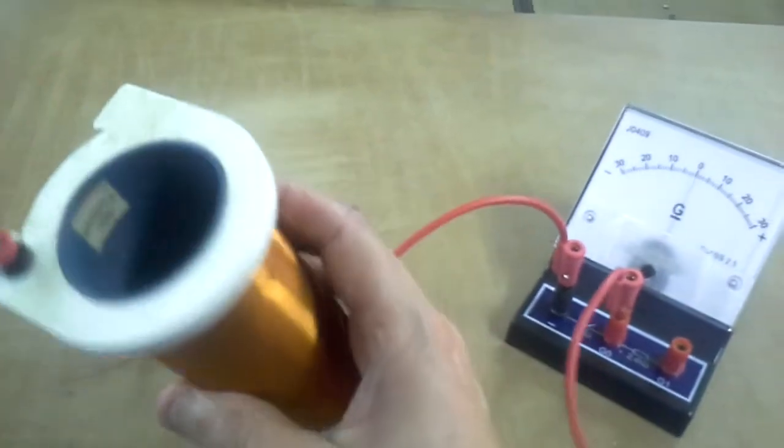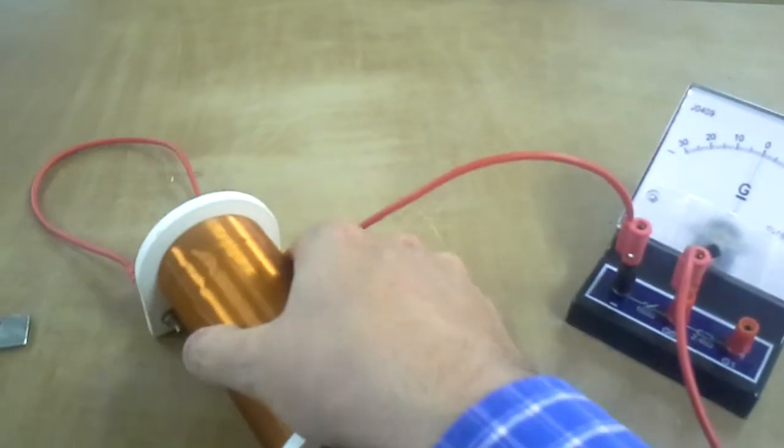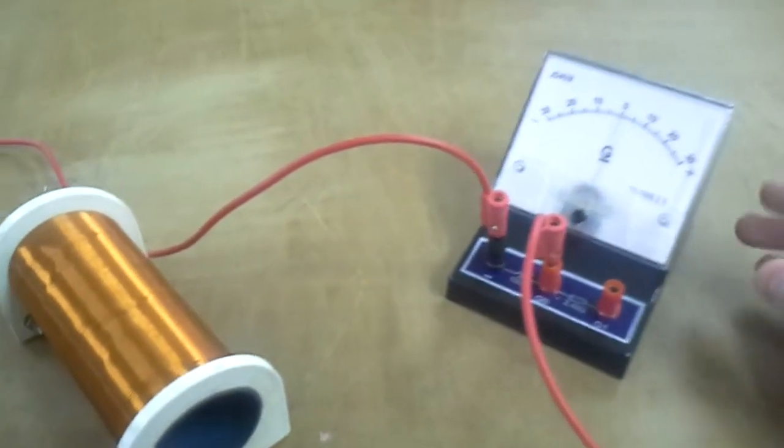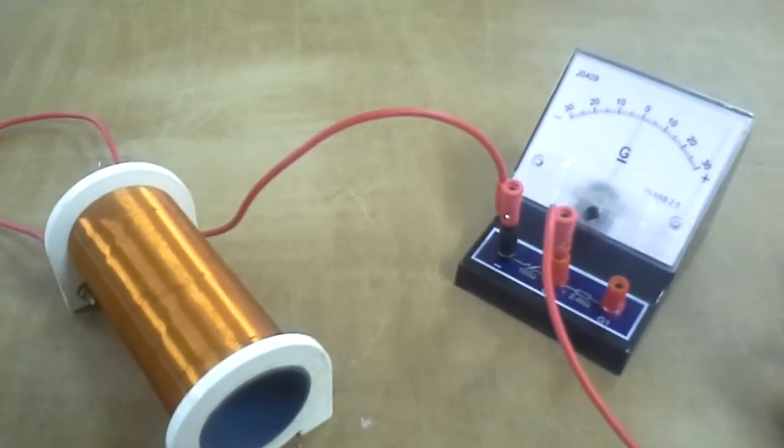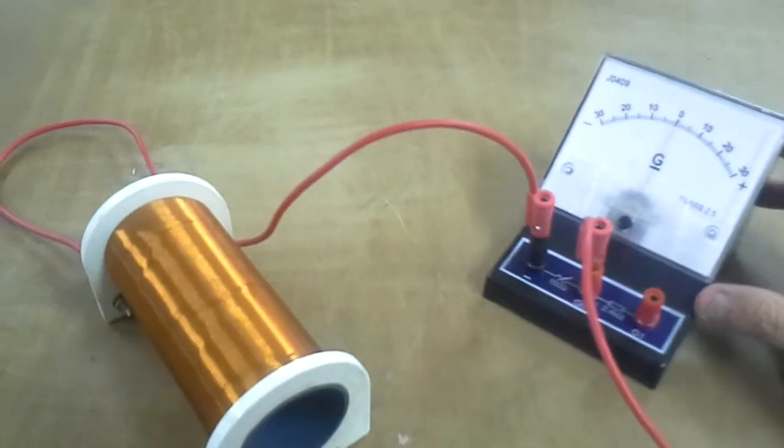You can see the tubing here, and I've connected it up to this piece of equipment called a galvanometer, which is basically an ammeter that works in two directions, so it'll show current going in one direction and the other direction.